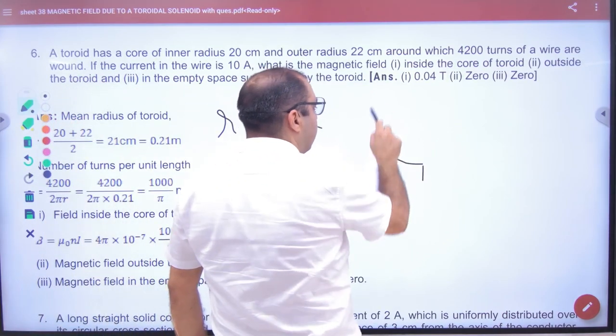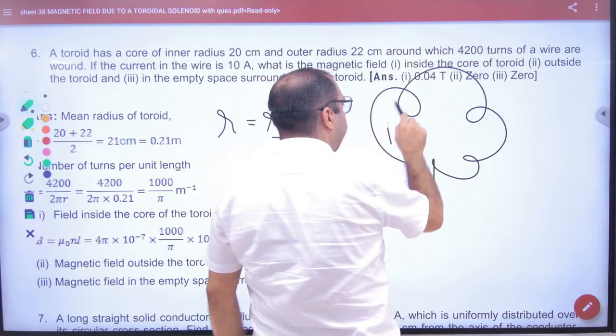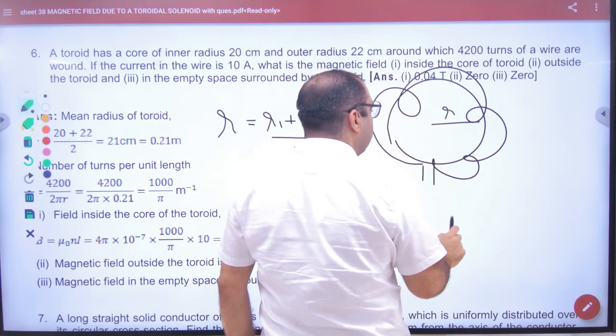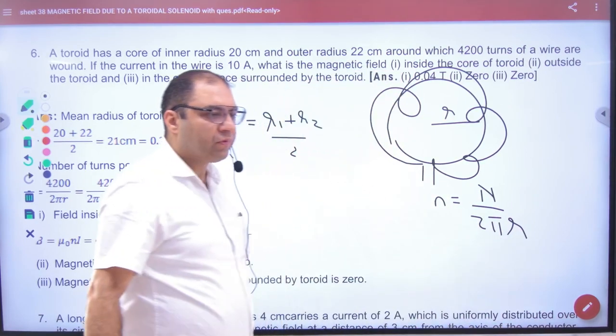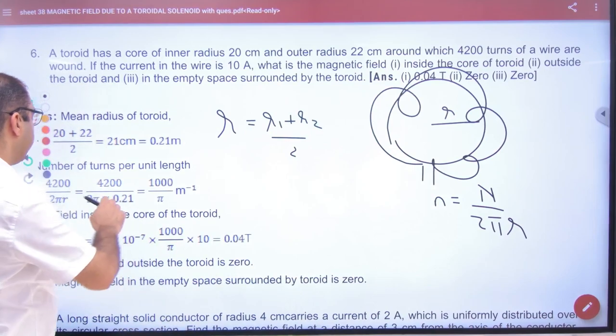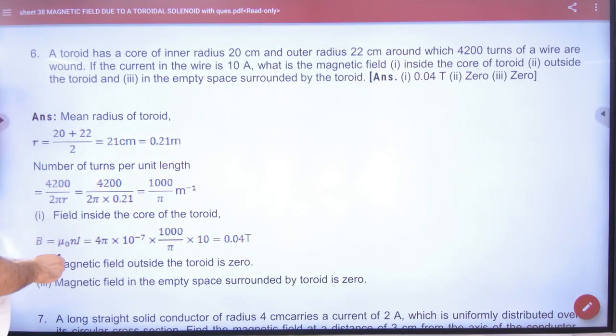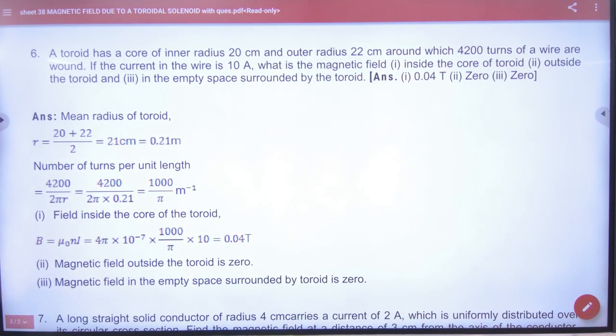Now the question is solved. If you have a toroid with a radius, what do you do? R1 plus R2 divided by 2. Now what will happen? Number of turns per unit length will be divided by 2πR. That will be put in the question.